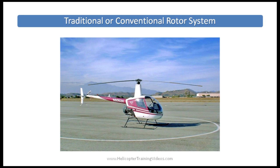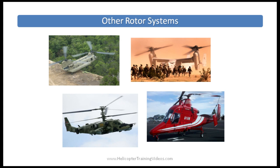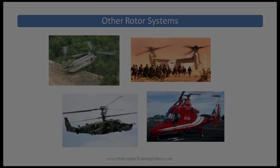Now we were just looking at traditional or conventional rotor systems in an R-22, but there are other rotor systems that don't require a tail rotor or an anti-torque system, because the two main rotors themselves counter out each other's torque by turning in opposite directions in equal amounts.